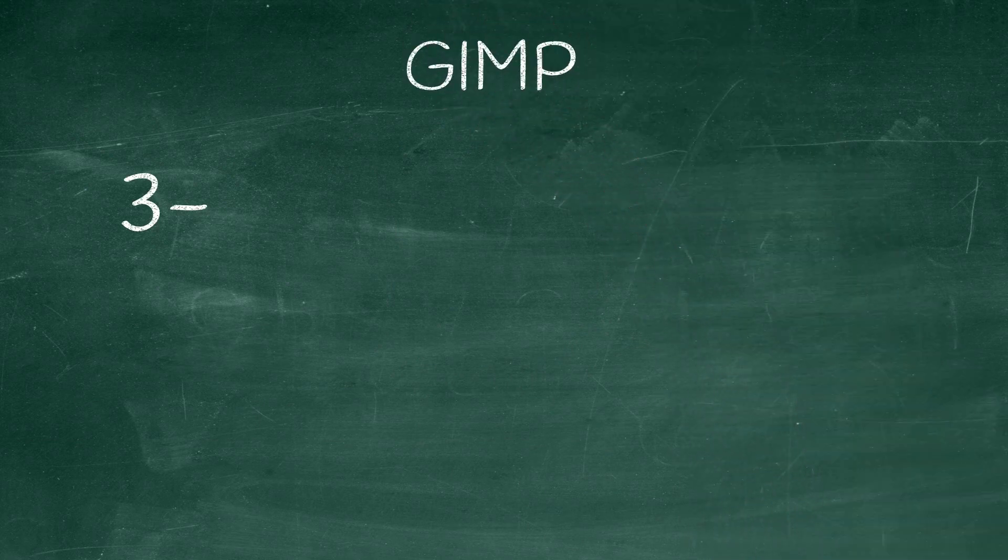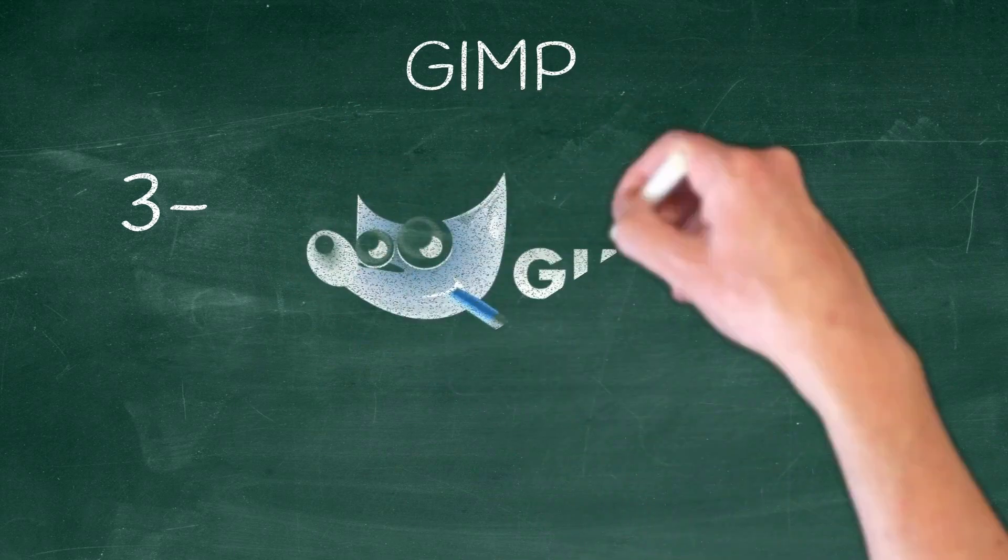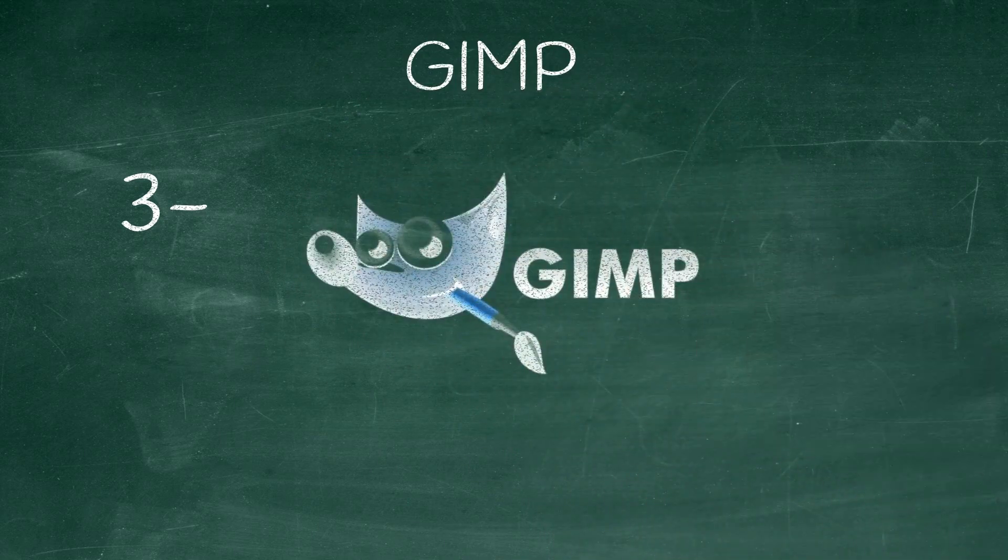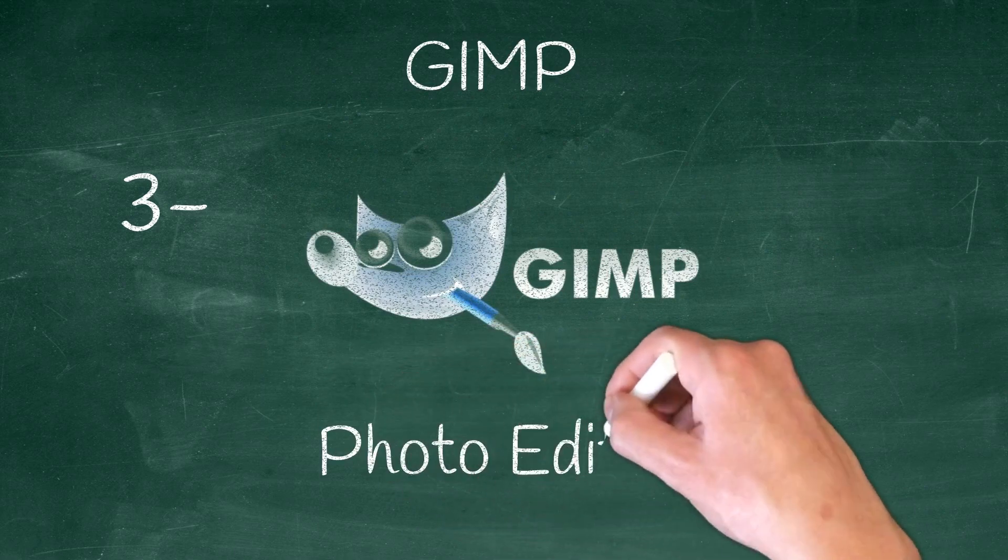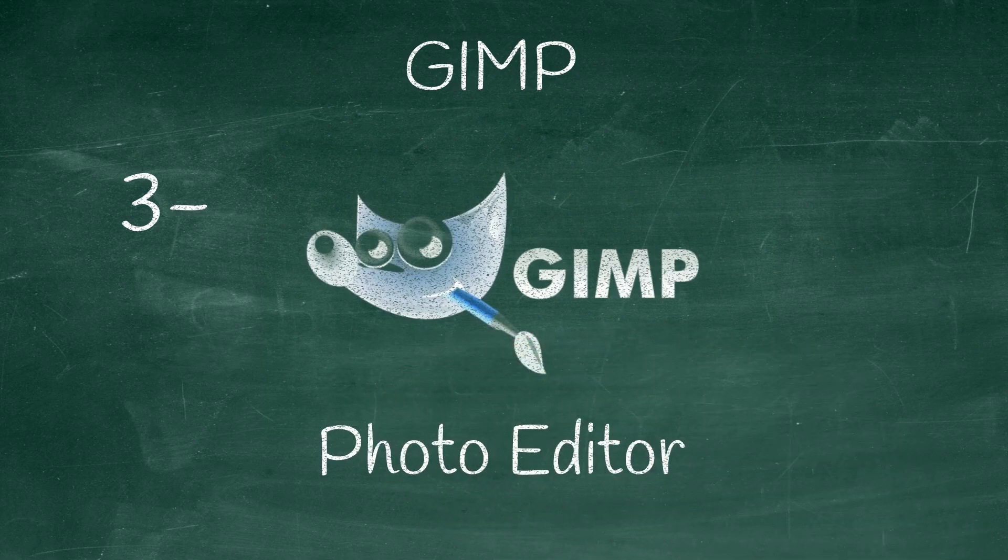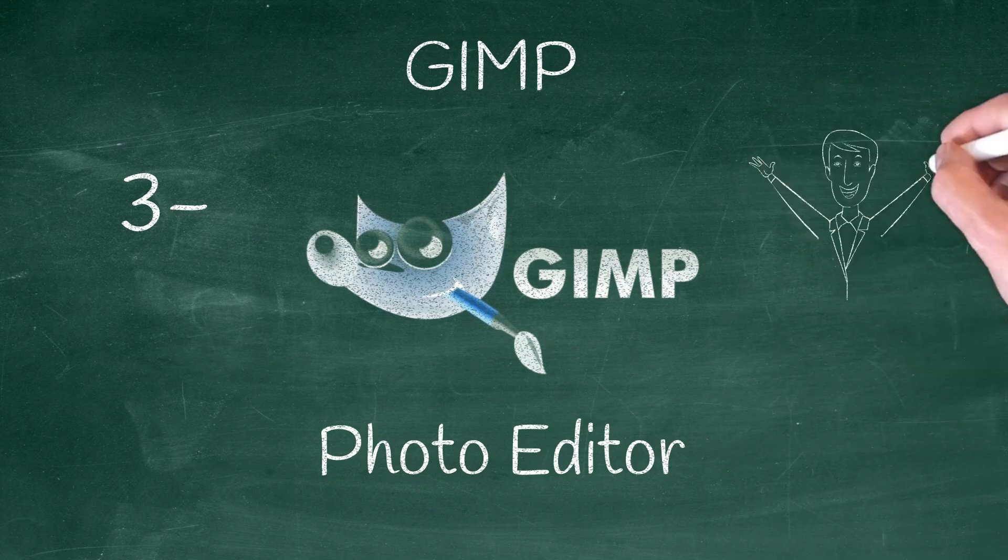Number 3, GIMP. GIMP is the Photoshop alternative for Linux. It is open source, full-featured, and professional photo editing software. It is packed with a wide range of tools for manipulating images. And on top of that, there are various customization options and third-party plugins for enhancing the experience.